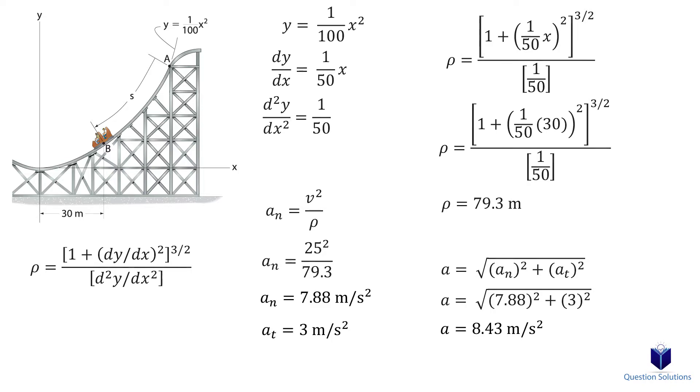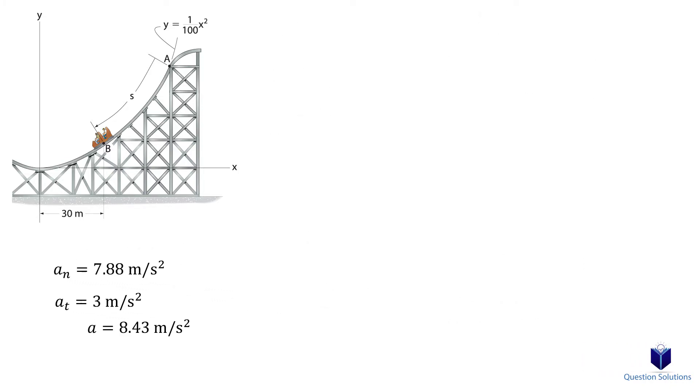For the second part of the question, we need to figure out the angle the magnitude of acceleration makes with the x-axis. So first, we need to draw a tangent line at location B.